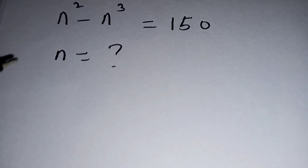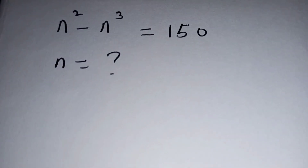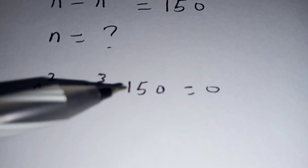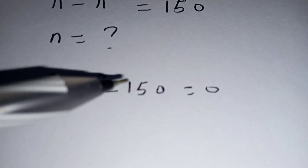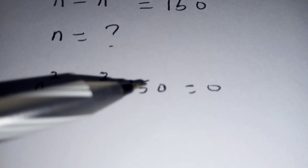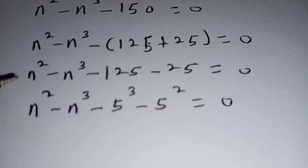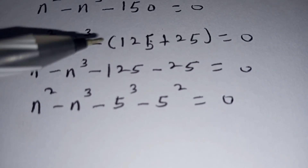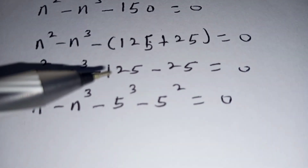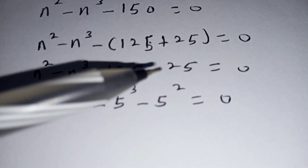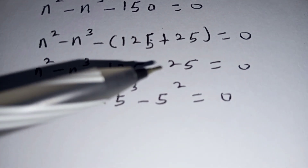The first thing is we bring 1 fifth to the left so that on the right you will be left with 0. 1 fifth can be written as 125 plus 25. So removing this bracket, 125 will become negative and the positive 25 will become negative.